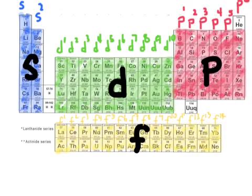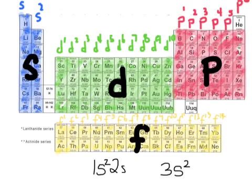So you can see this is a way to help us write those electron configurations. Let me show you the electron configuration for magnesium, just to prove that this works. If I look at magnesium on the periodic table, I can see it's in row 3, so right away I know that the electron configuration for magnesium is going to end in 3s2. Everything always starts with 1s2, then 2s2, then 2p6. Magnesium has 12 electrons, and if I count up all the electrons, I have 12 — so this is the electron configuration for magnesium.